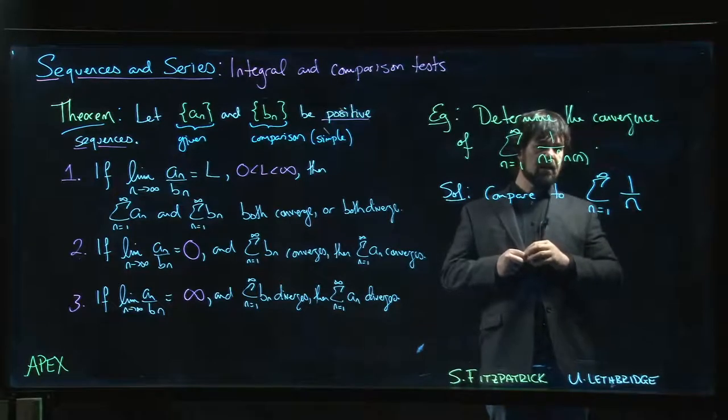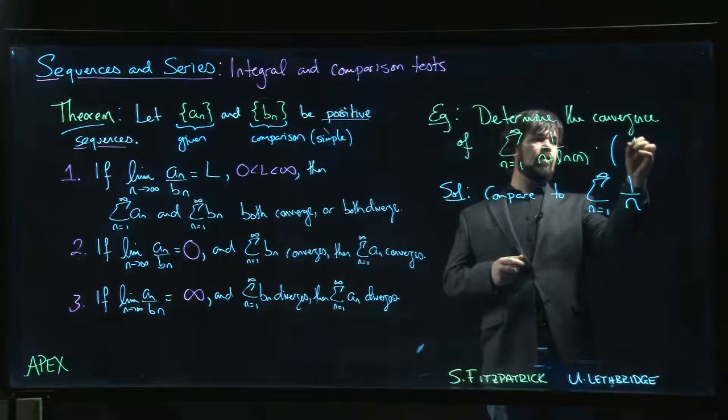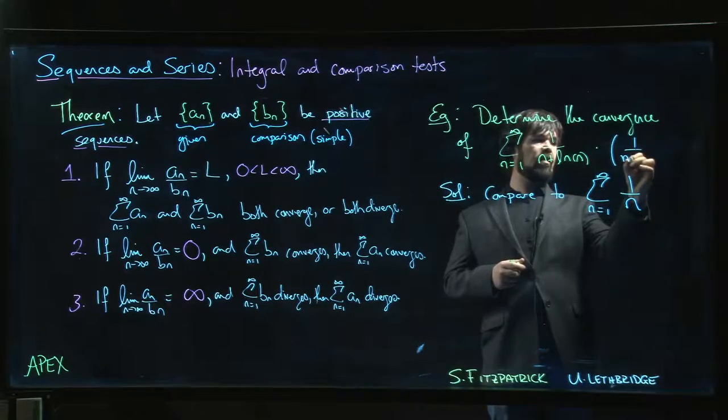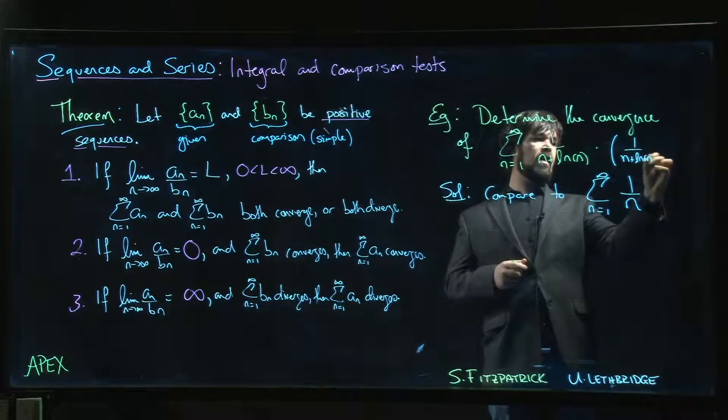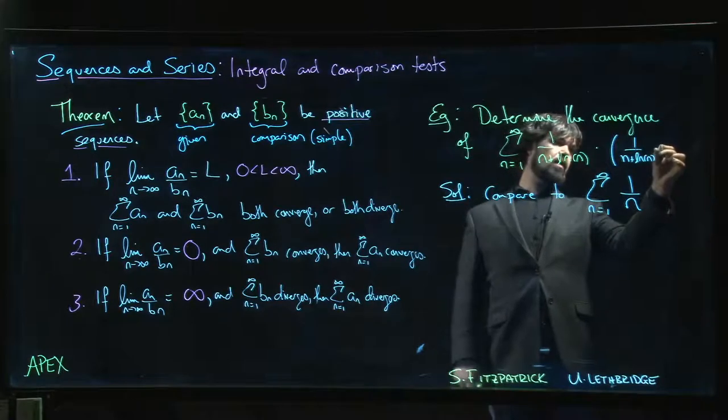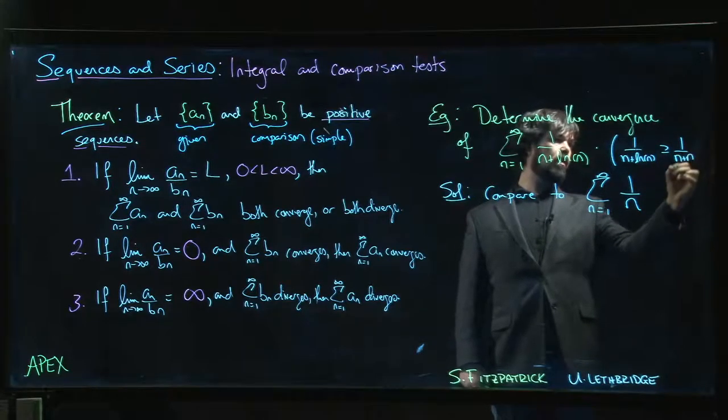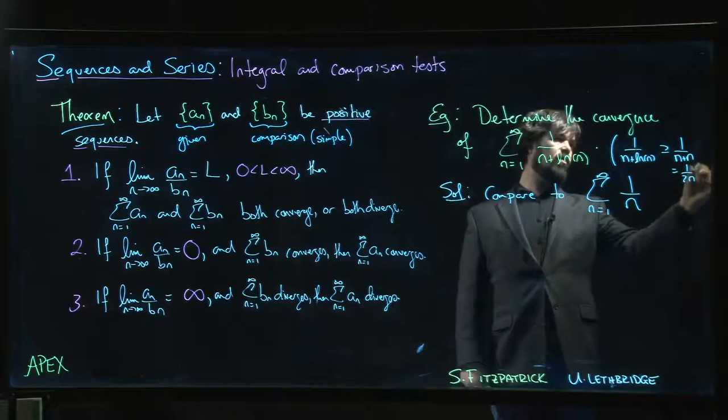That said, we could have done here, if you wanted to do direct comparison, we might notice this. The natural log of n is always smaller than n. So this is going to be bigger than or equal to, let's make the denominator a little bit bigger, makes this thing smaller, n plus n, which is just 1 over 2n.